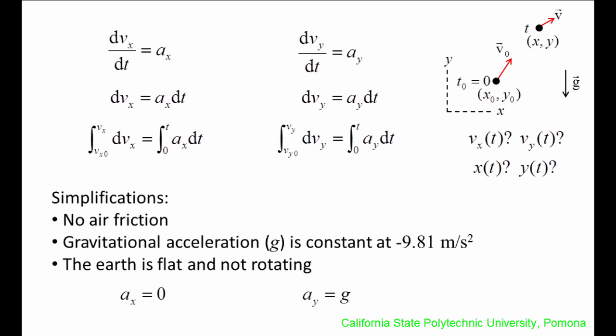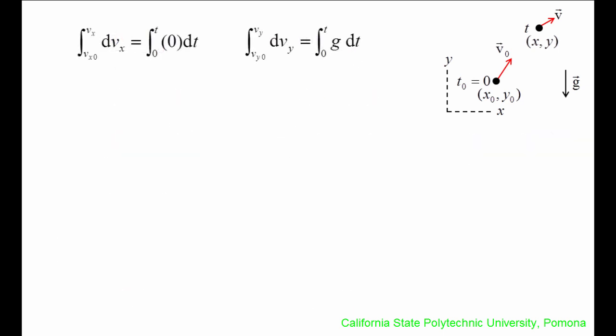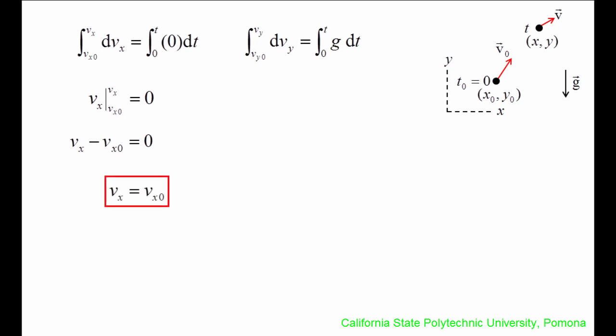Let's plug ax and ay into the two equations above. For the left equation, the integral of dvx is vx and the integral of zero times dt is zero. Evaluating vx from the initial velocity to the final velocity gives vx minus vx0, which is equal to zero. After rearranging, we are left with vx is equal to vx0. This means that the x-component of the velocity is constant in time.